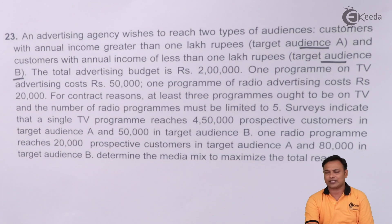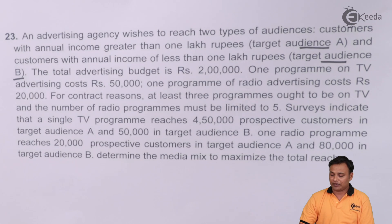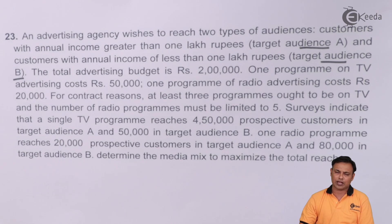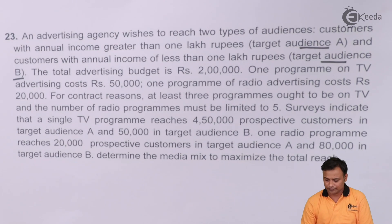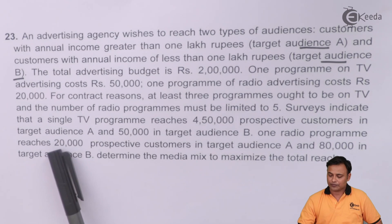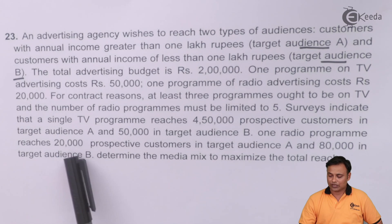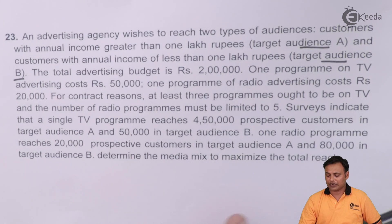Surveys indicate that a single TV program reaches 4,50,000 customers in target audience A and 50,000 in target audience B. So if I place one program on TV, the reach is more: 4,50,000 of type A and 50,000 of type B. And in case of radio, the reach is less: 20,000 of type A and 80,000 of type B.